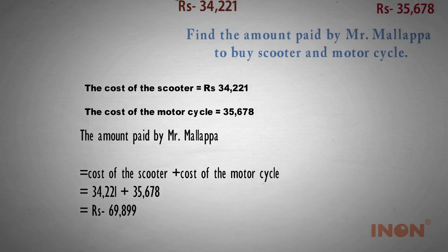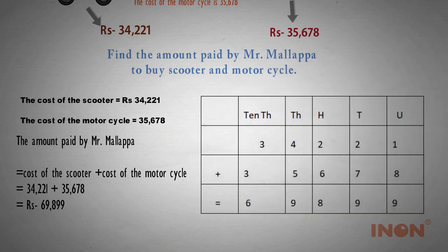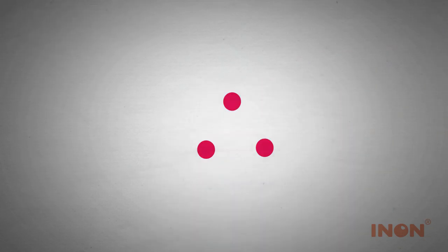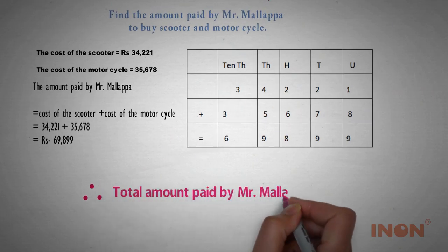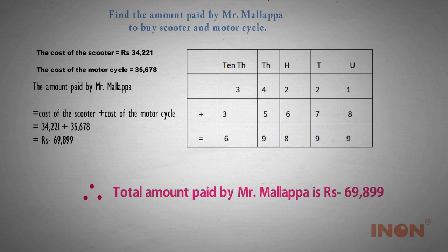By adding both costs, we get Rs. 69,899. Therefore, the total amount paid by Mr. Mallappa is Rs. 69,899.